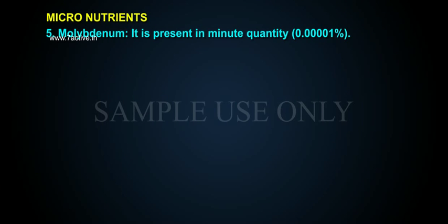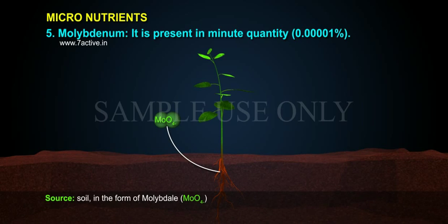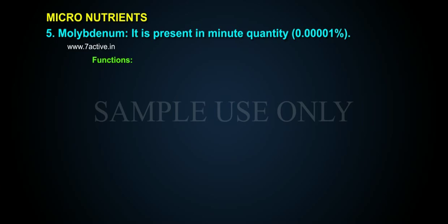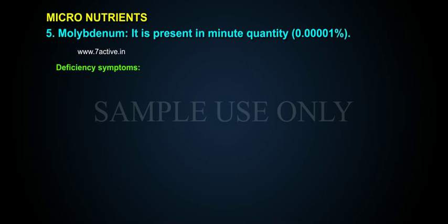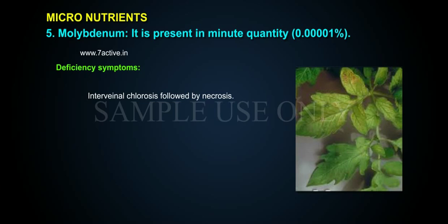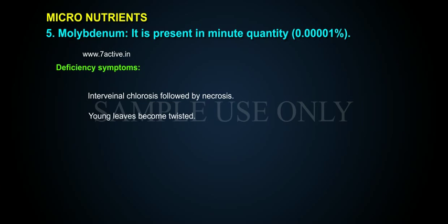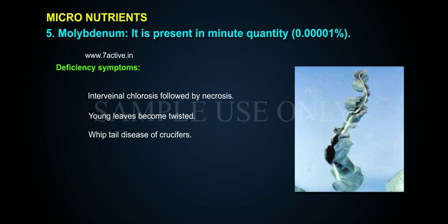Molybdenum is present in minute quantity — 0.00001% — and is sourced from soil in the form of molybdate ions (MoO4 2-). Its functions include a role in nitrogen fixation, acting as an activator, and as a component of nitrate reductase. Deficiency symptoms include interveinal chlorosis followed by necrosis, young leaves becoming twisted, and whip-tail disease.